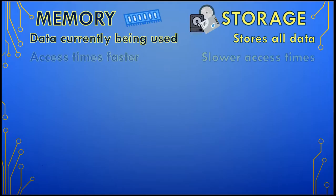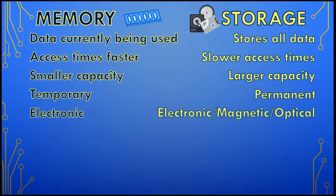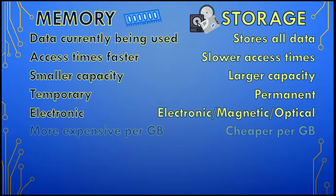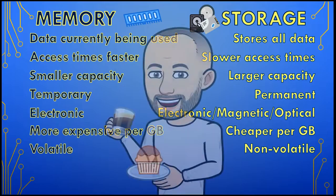Memory's access times are faster than storage, but storage can store more information. Memory is temporary while storage is permanent. Memory works electronically while storage could be electronic, magnetic, or optical. Memory is more expensive per gigabyte, and it is volatile.